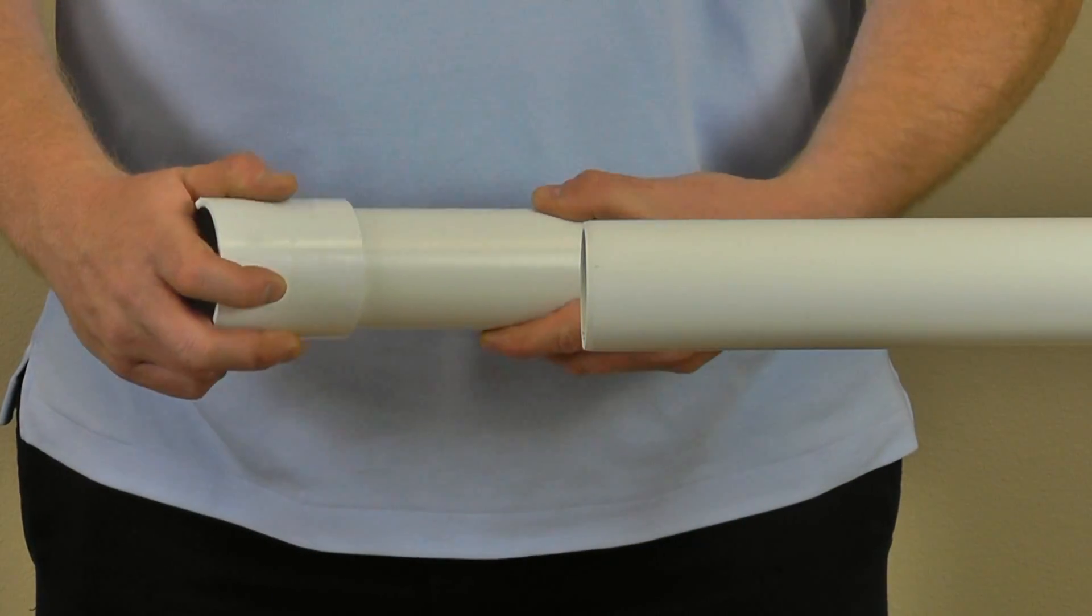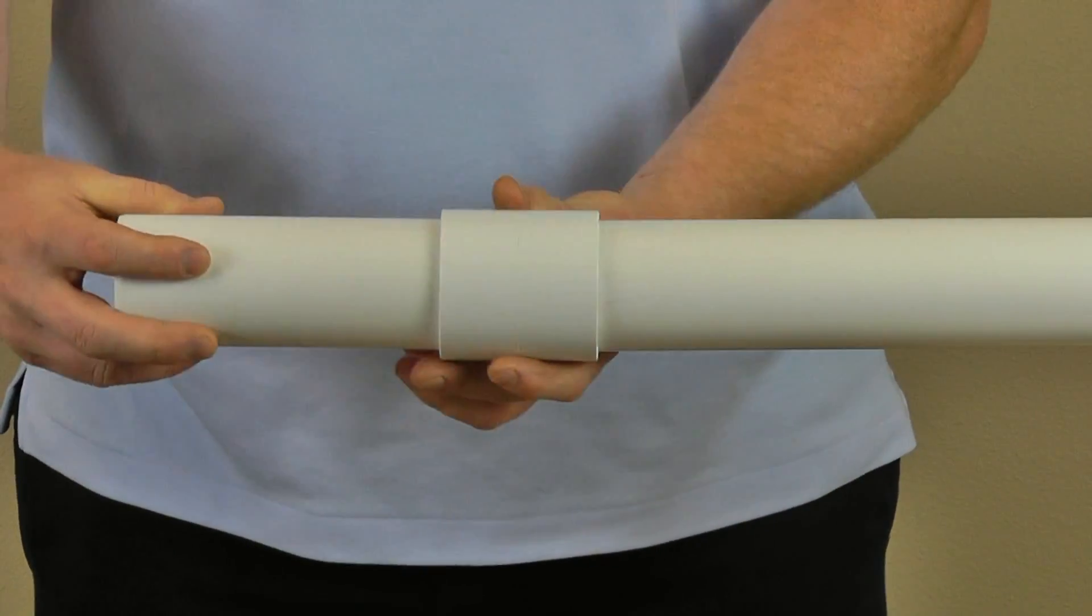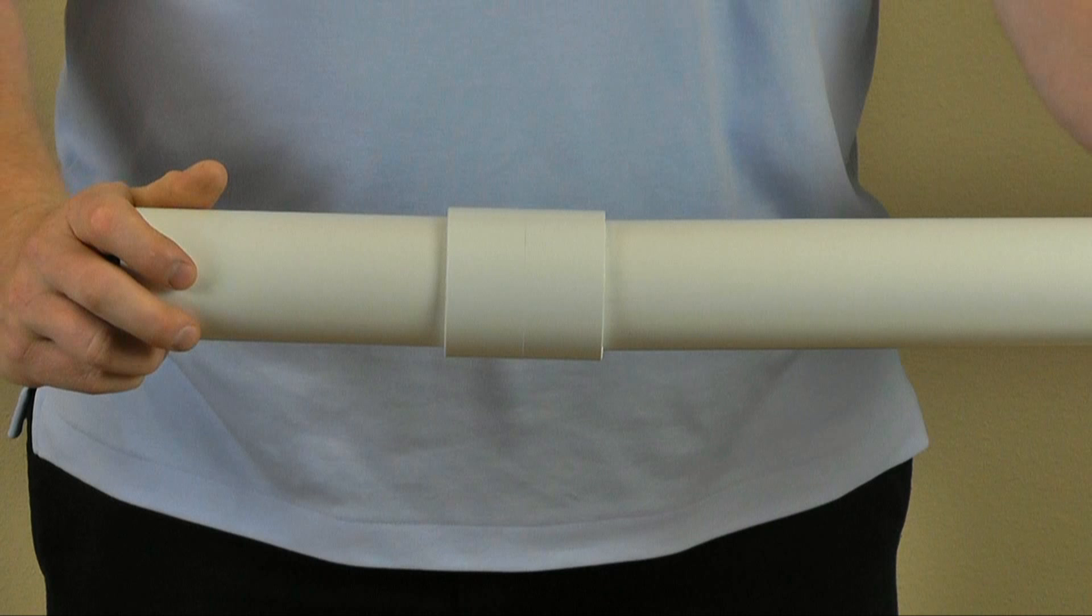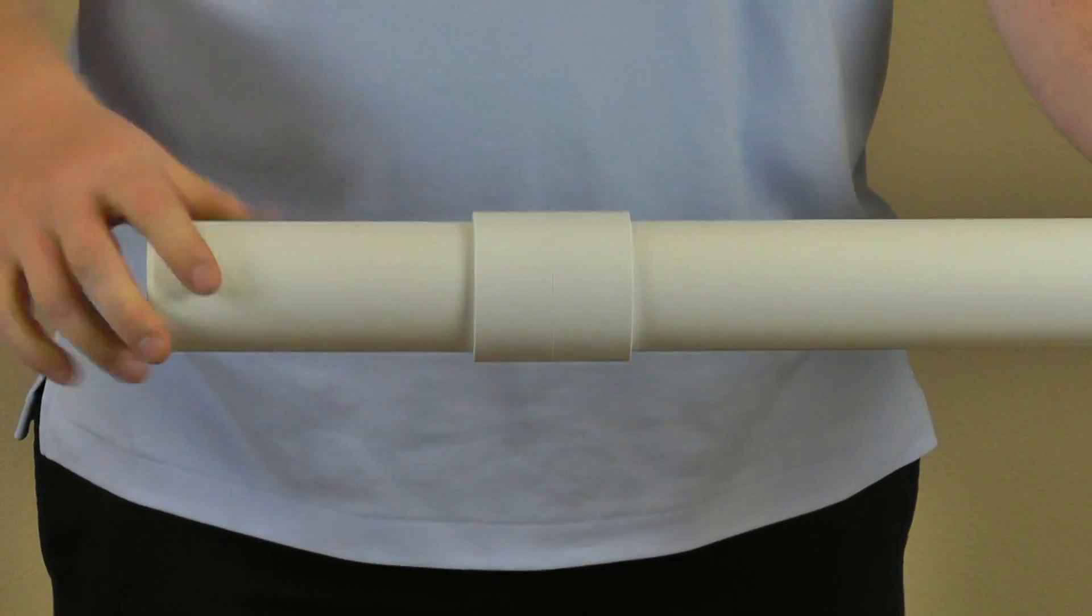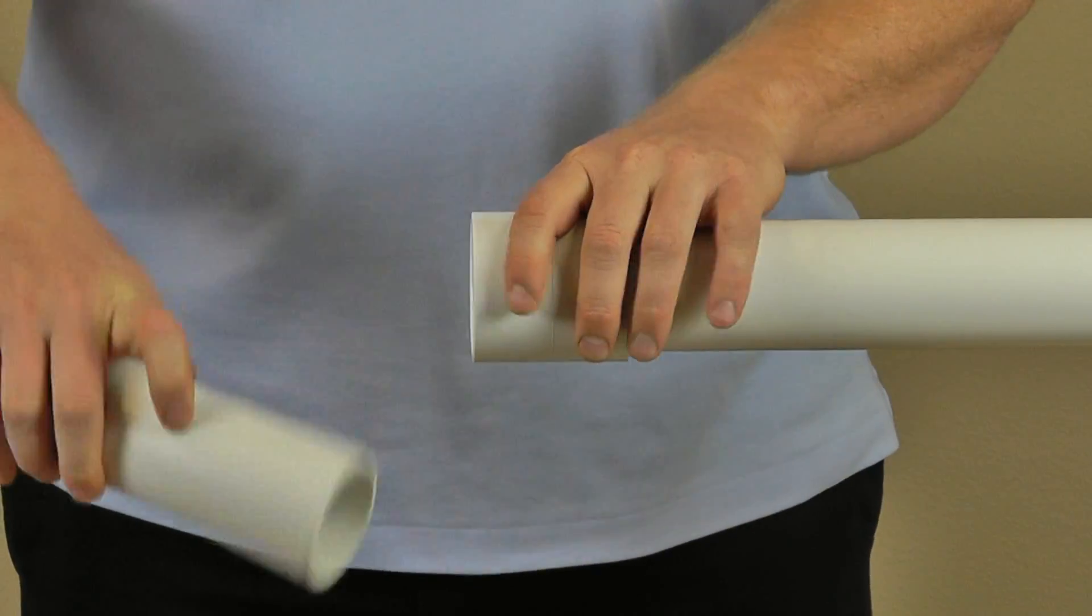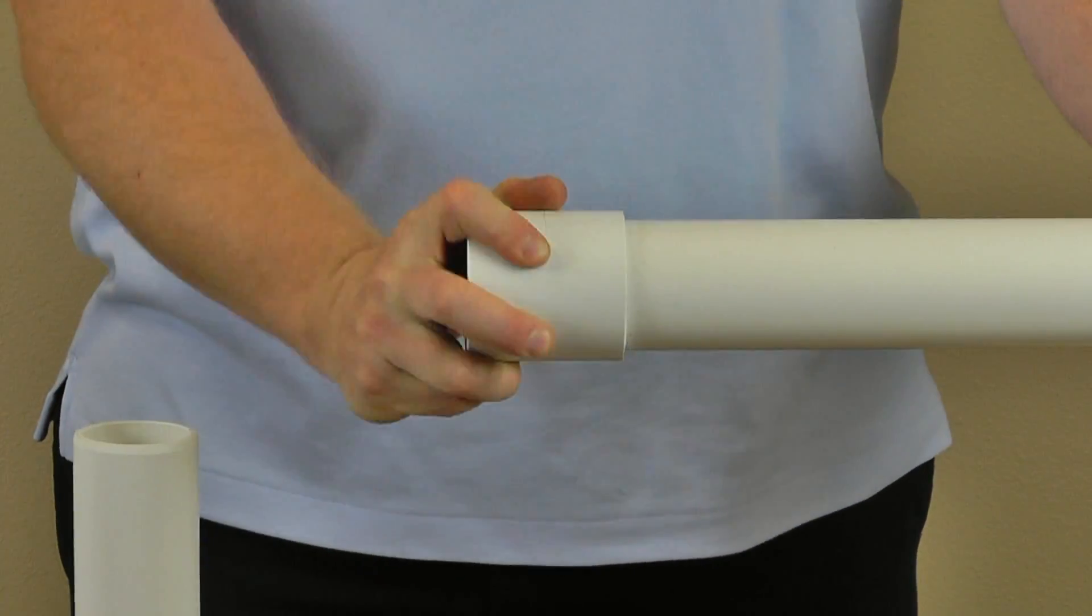Second, check the dry fit of each joint. A good dry fit is confirmed when the pipe enters the socket 1/3 to 2/3 of the socket depth before binding. This is referred to as an interference fit. If the dry pipe is able to be fully inserted into the socket without interference and is loose or wobbly, it should not be used.